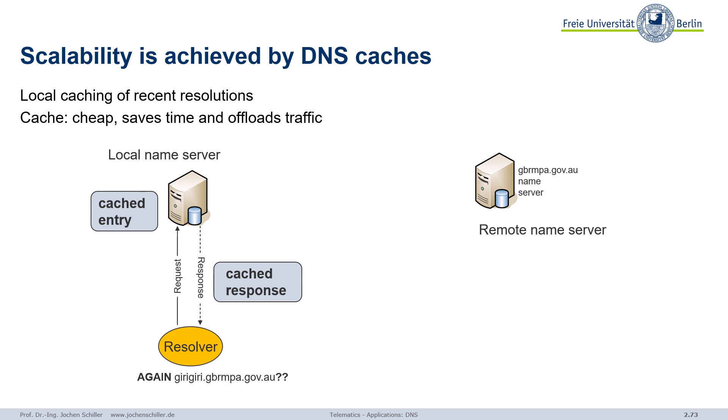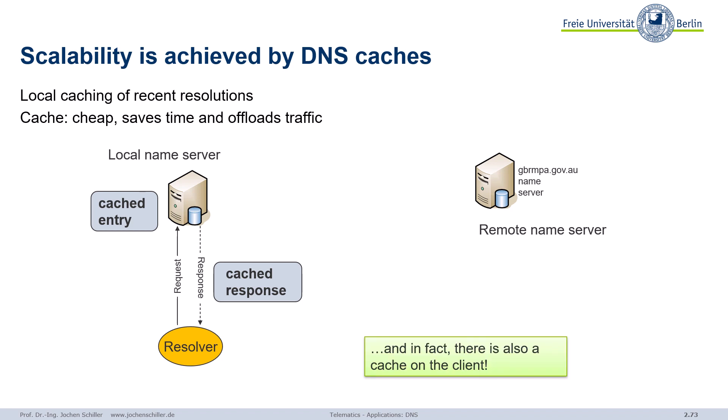That's fast. Checking the cache is much faster than asking external servers because of delay — two-thirds speed of light, remote servers — it takes longer. Plus, there's also a cache on the client. In the vast majority of cases, you get answers from your own computer directly because you have a local cache. When you load a web page, you basically need the IP address a thousand times or more for a simple page — you will not go to a name server, you have a local cache.